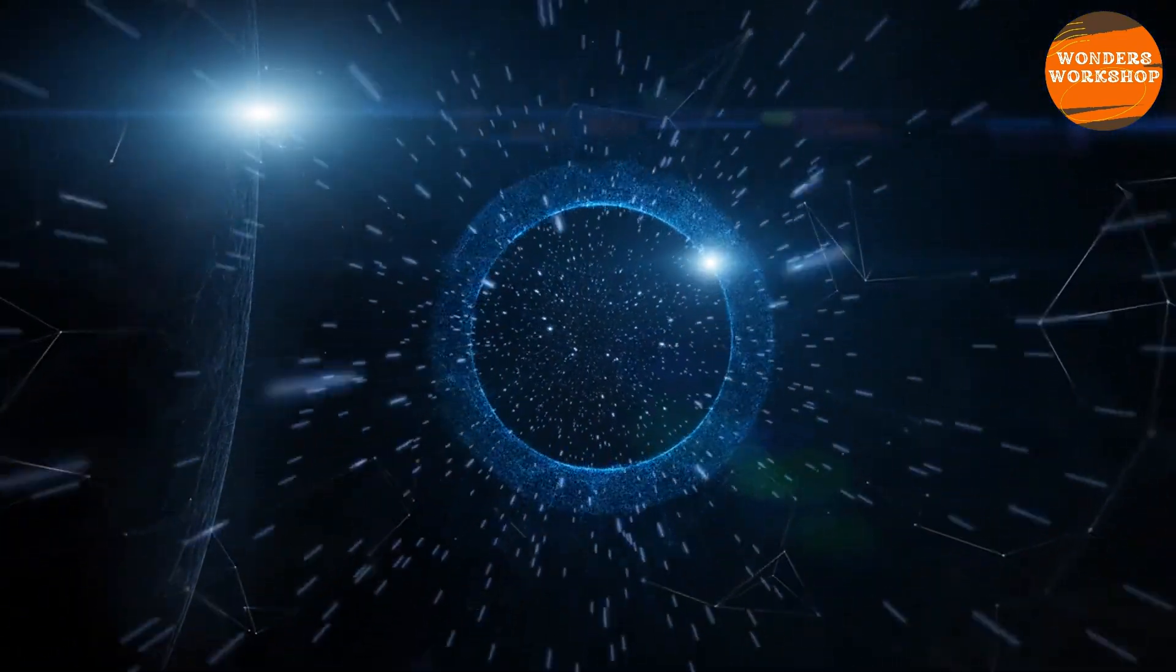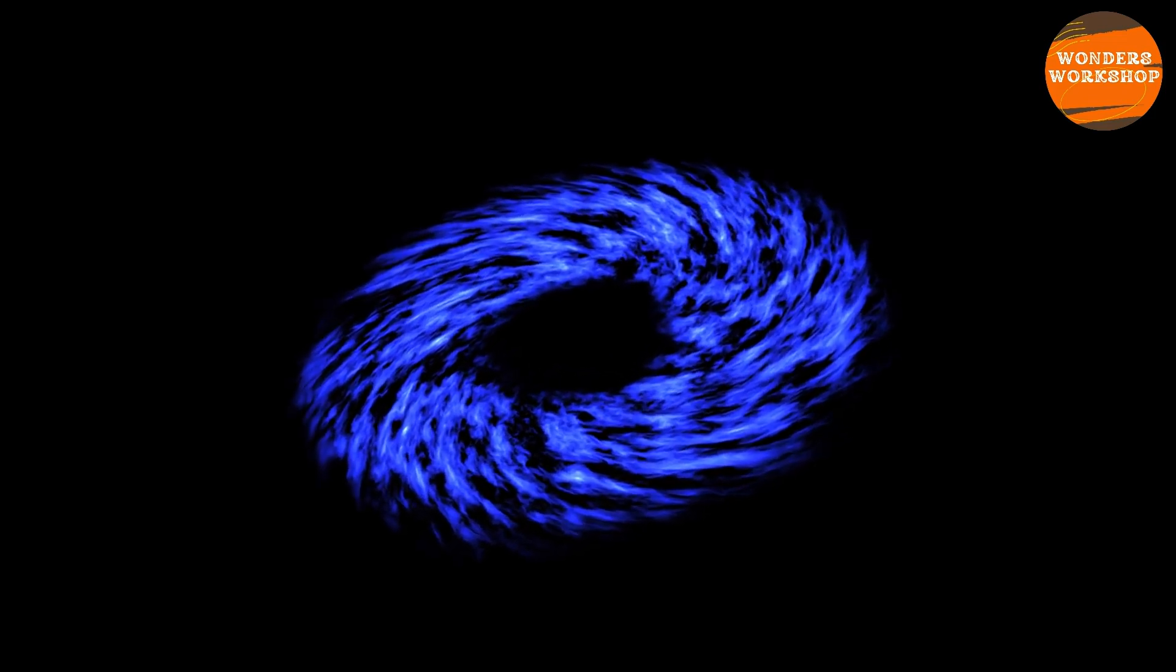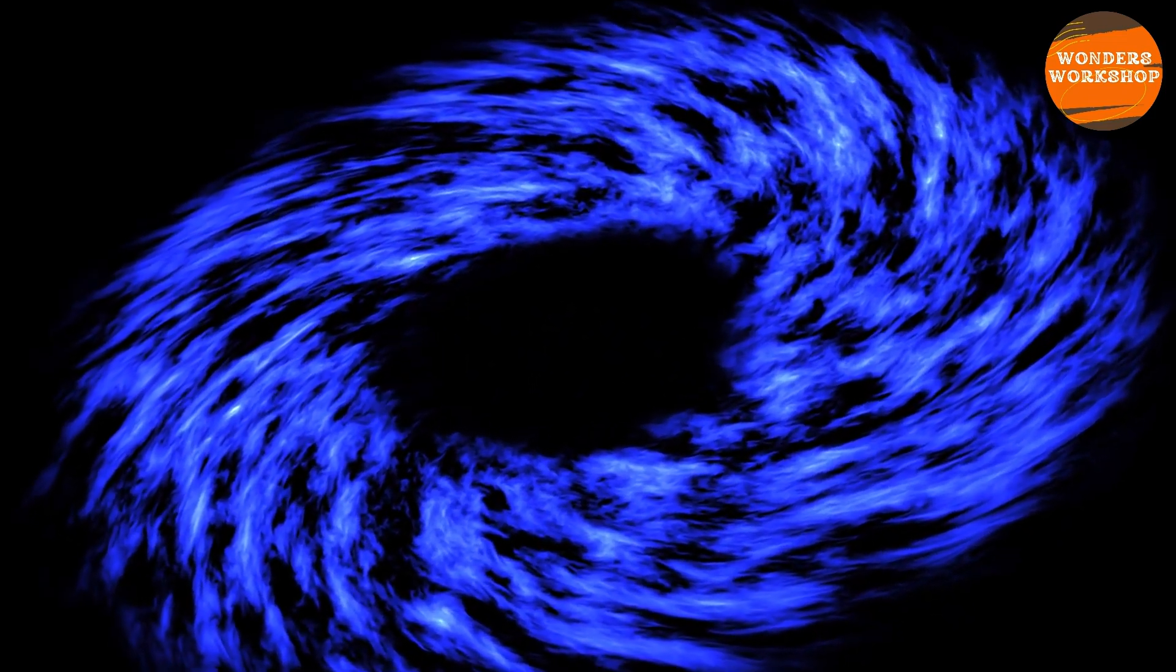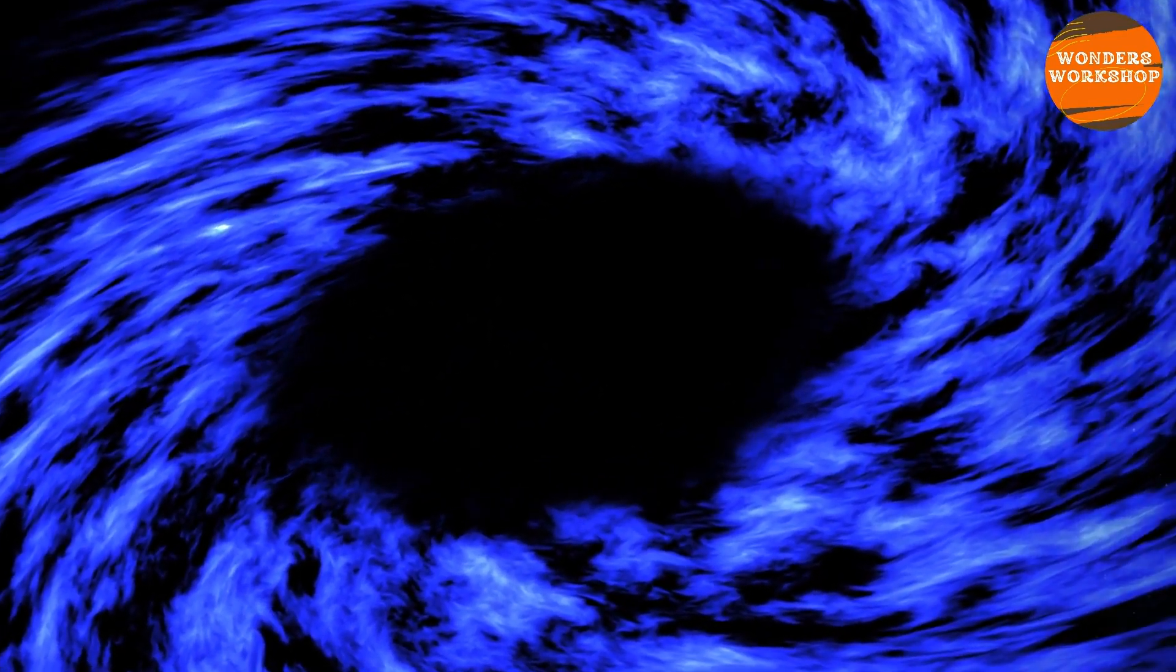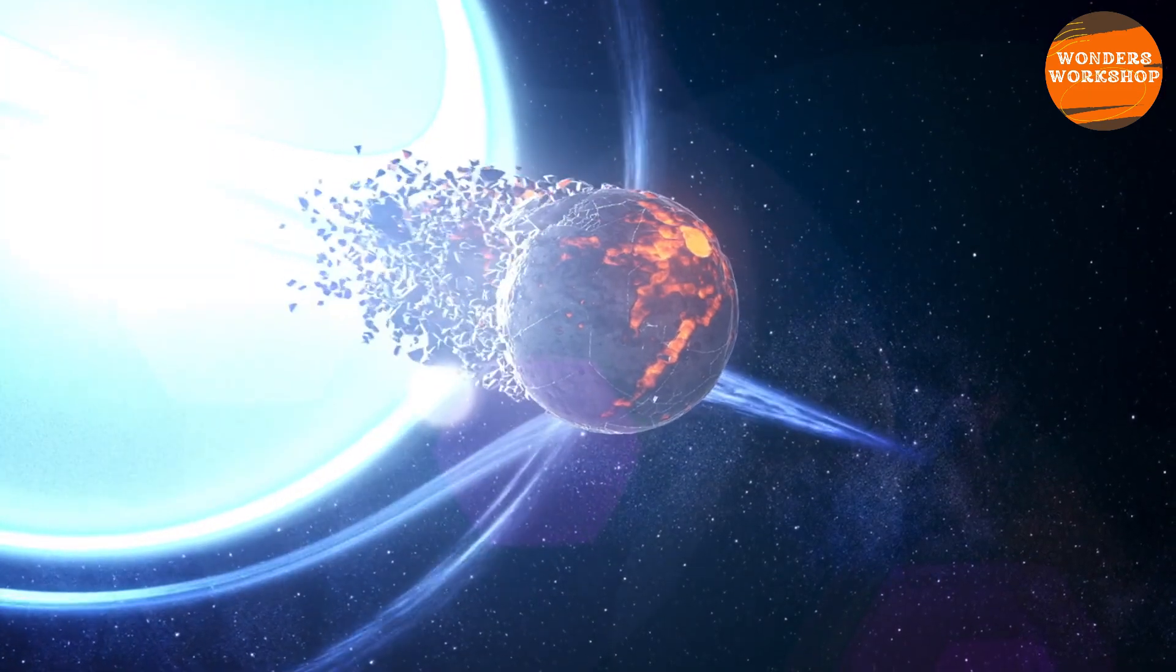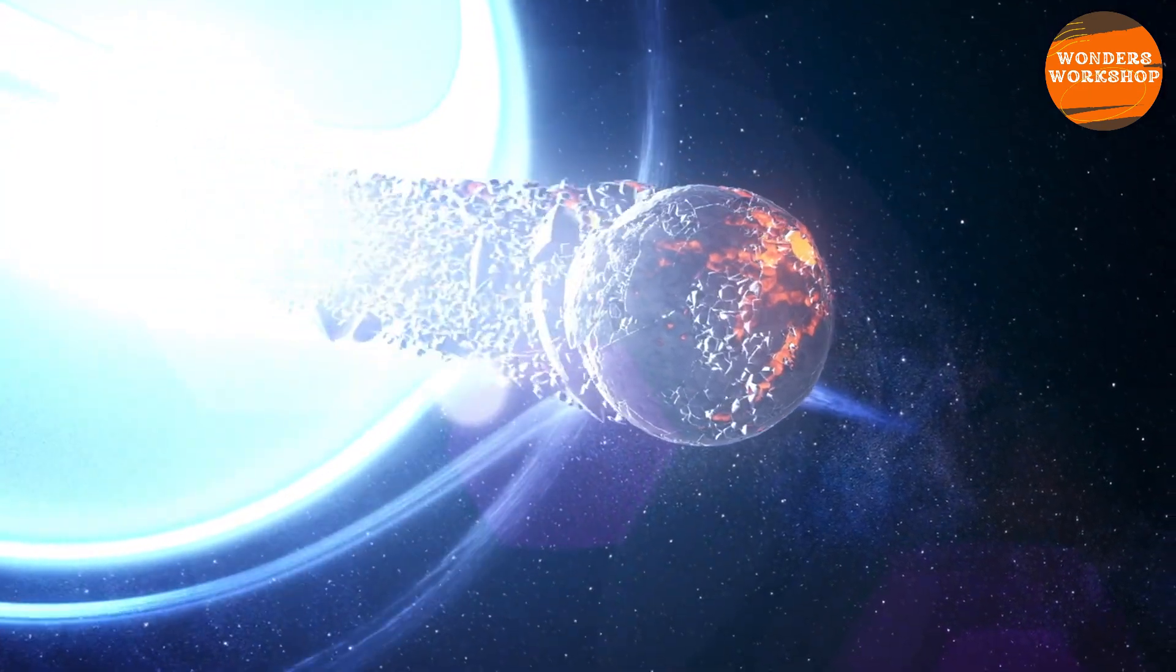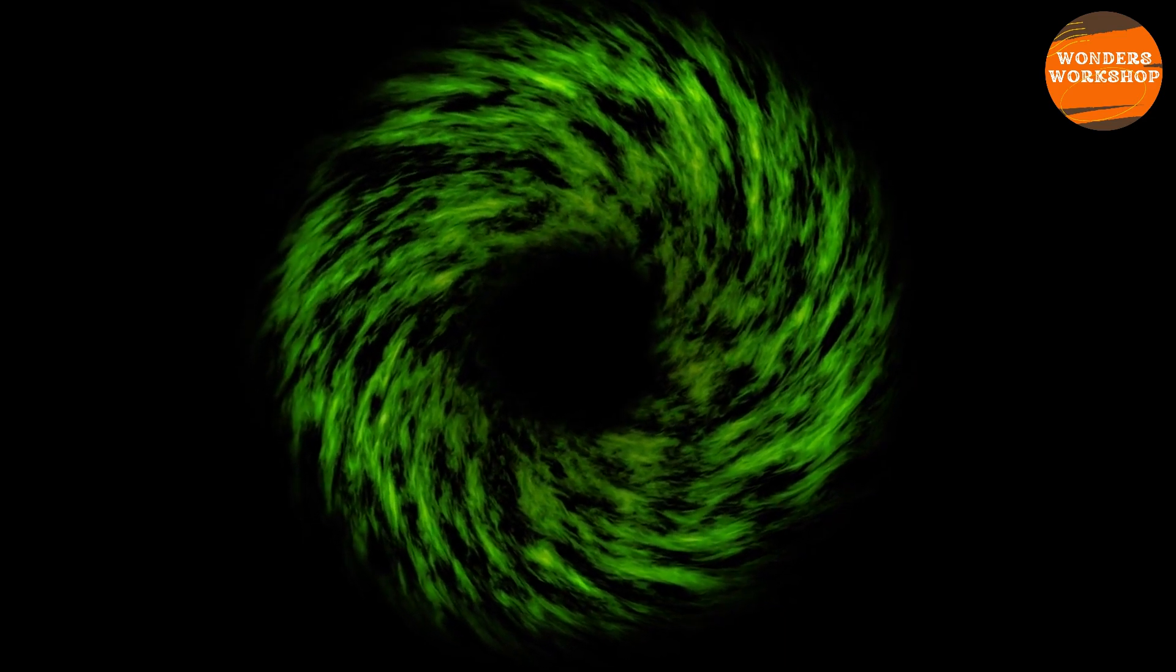But there are even bigger and more dangerous black holes in the universe. Researchers could hardly believe that supermassive black holes could be surpassed, but it is a reality. In the cosmos, there are ultra-massive black holes that combine up to 40 billion solar masses. With about 66 billion solar masses, TON 618 is one of the most terrifying examples of this category. This black hole is located at the center of a powerful quasar in the constellation Canes Venatici, about 10 billion light years from Earth.